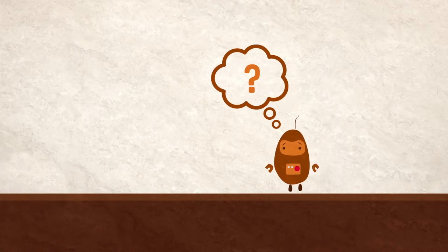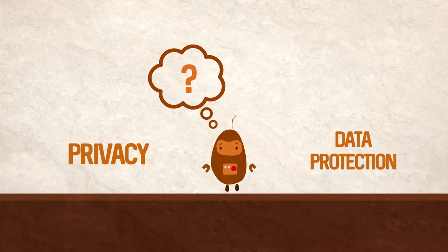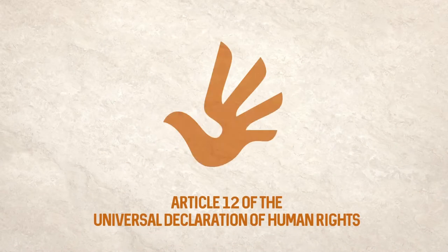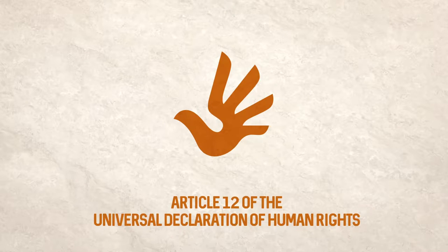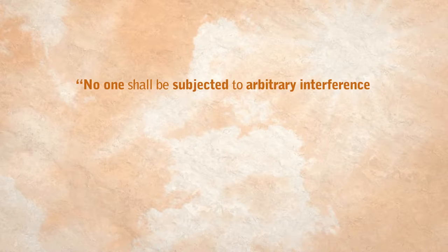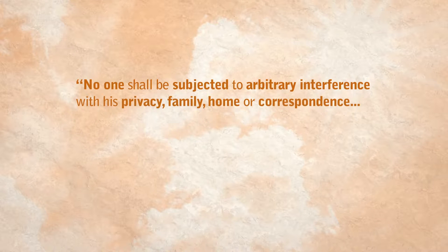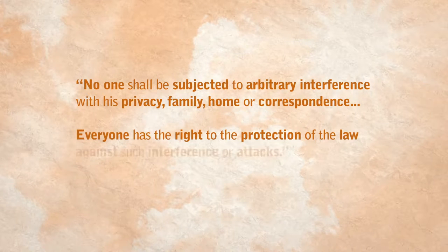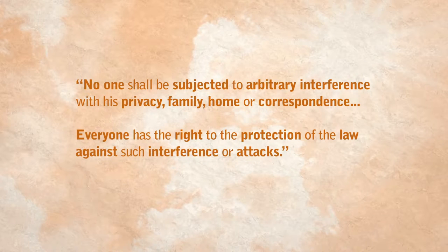So what are we talking about when we say privacy and data protection? Let's take privacy first. Article 12 of the Universal Declaration of Human Rights treats privacy as a distinct human right. It says that no one shall be subjected to arbitrary interference with his privacy, family, home, or correspondence.